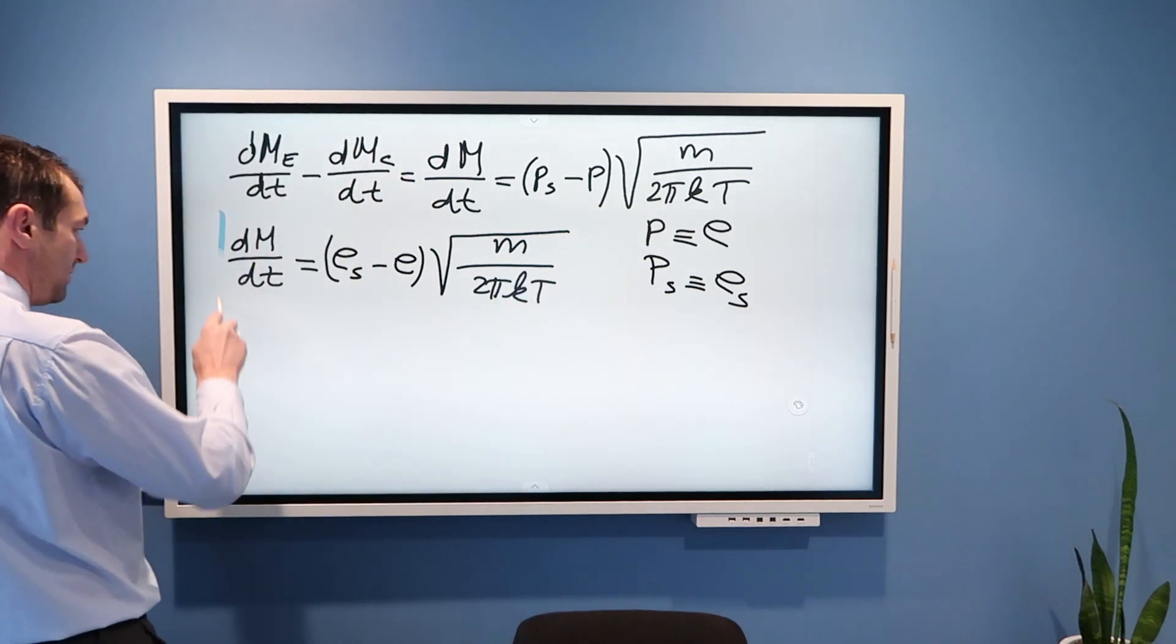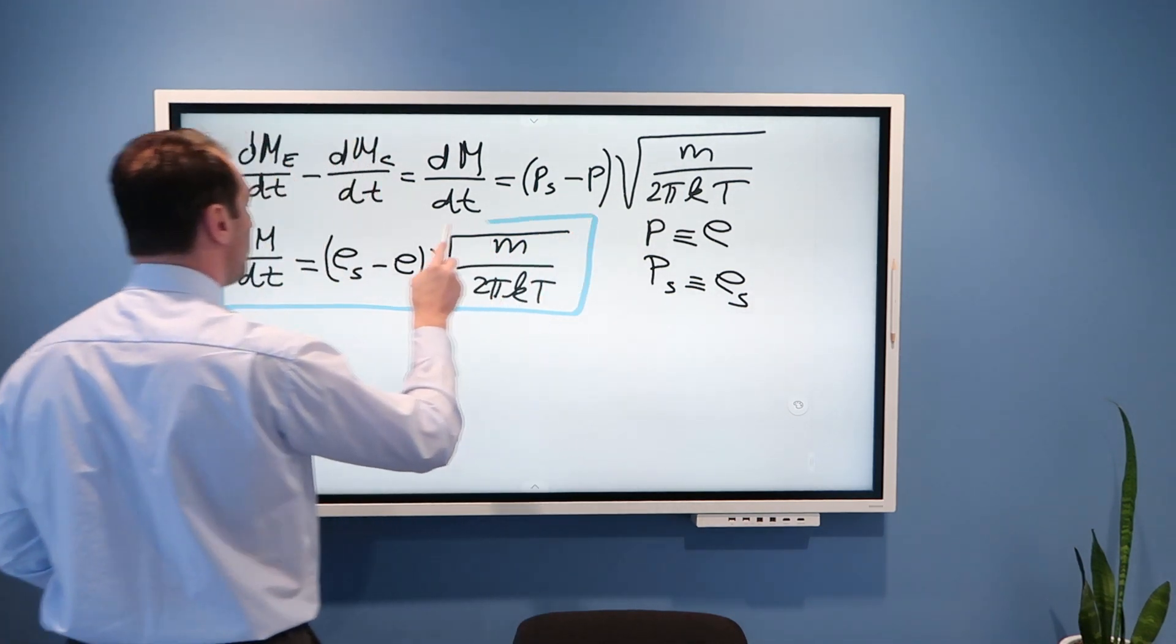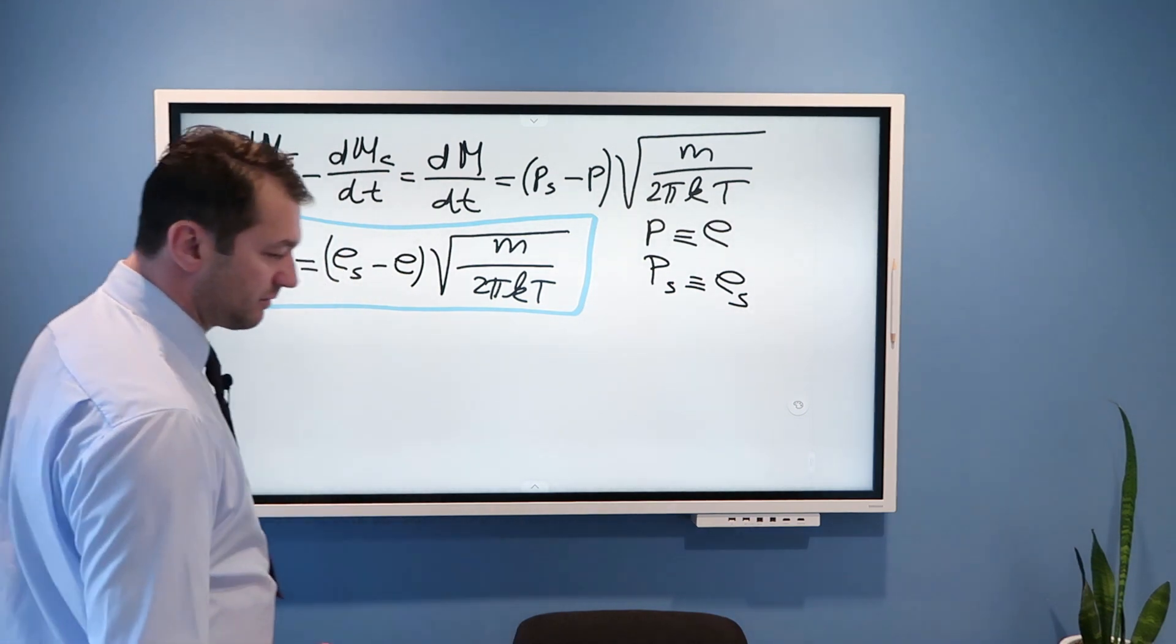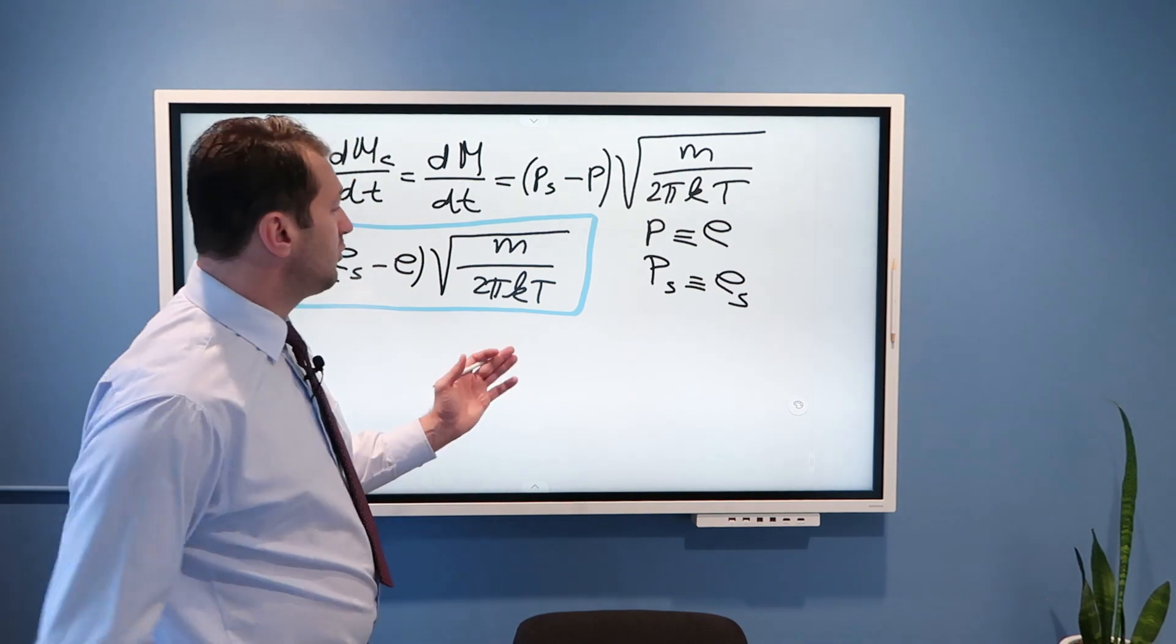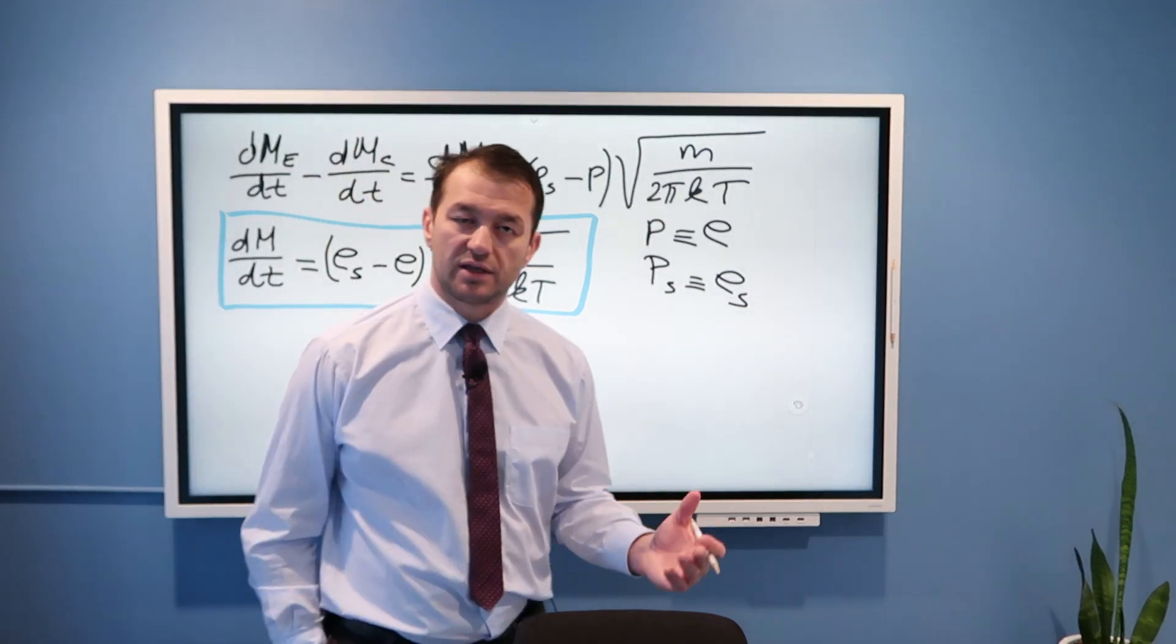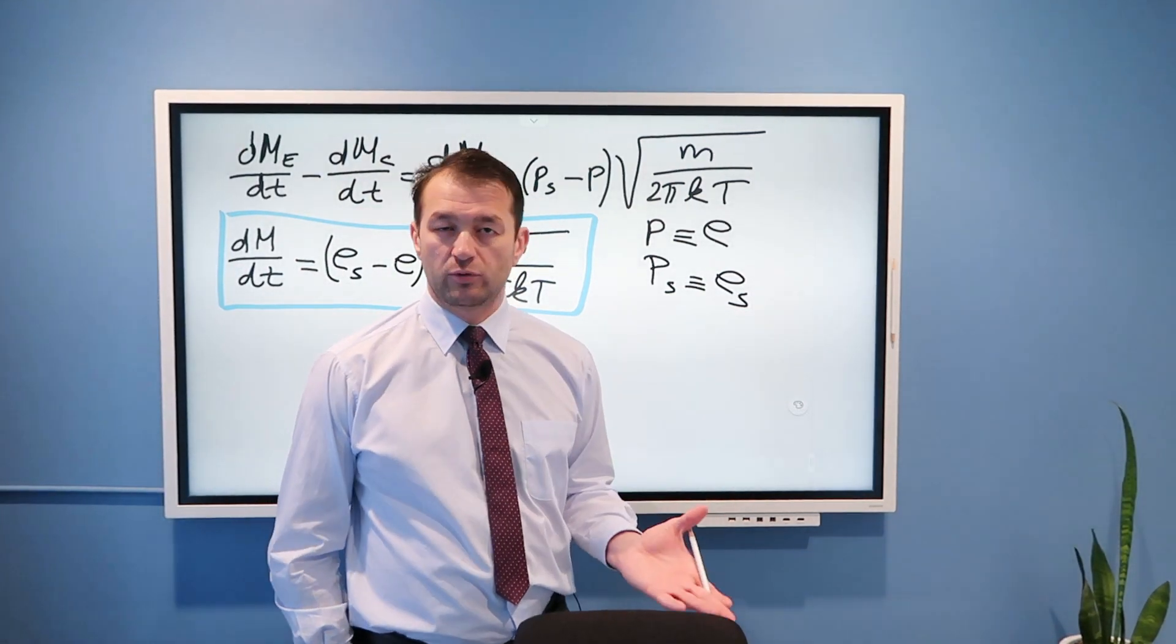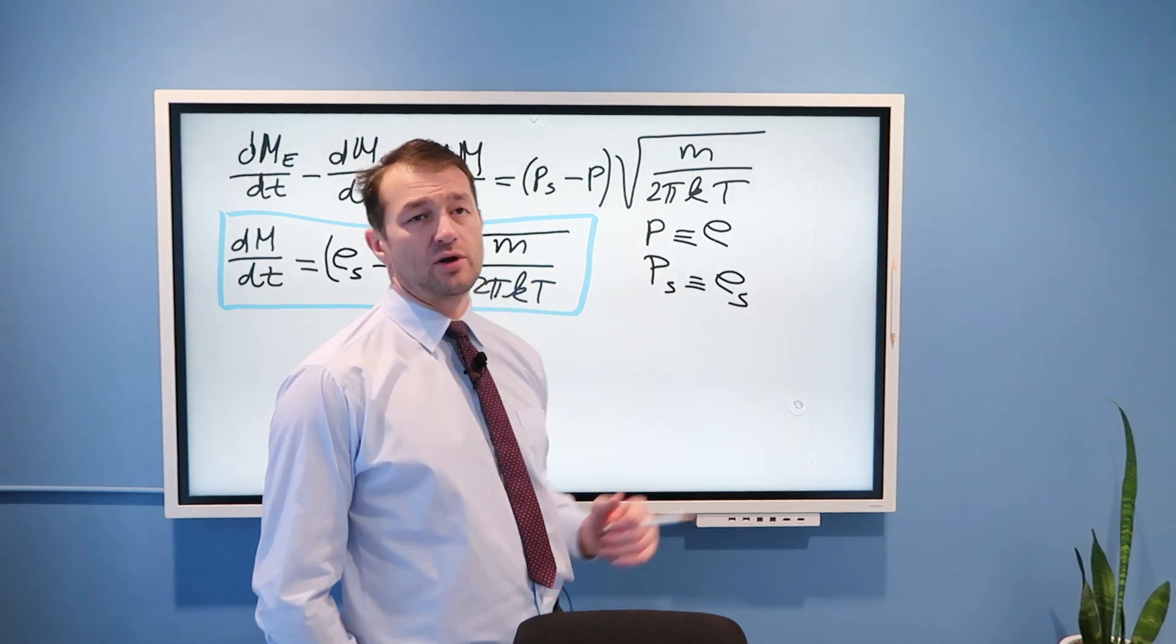Well, with that in mind, we can write that dm/dt is equal ES minus E square root m divided by 2πkT. And this is beautiful Langmuir's formula for the rate of evaporation. It is a very simple argument.